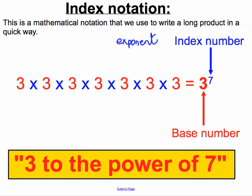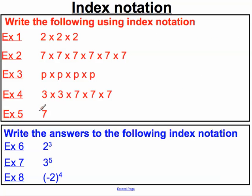Let's write out some index notation — look at the following five examples. Our base number here is two; we are multiplying two by itself three times: two times two times two. So a mathematician would simply write that as two to the power of three. Here, seven multiplied by itself six times — our base number is seven, multiplied by itself six times — gives us seven to the power of six.